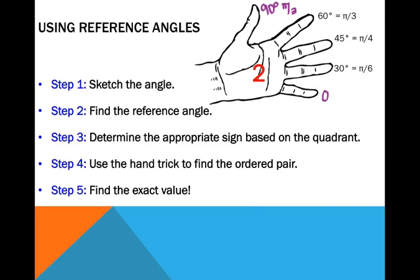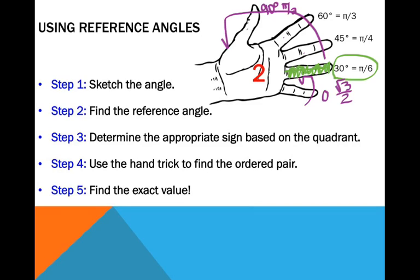When you're using the hand trick, you put that particular finger down for the angle. For example, if I'm looking at 30 degrees, I put this finger down. Your cosine is your x coordinate, and your x coordinate would be the square root of 3 — because you have 1, 2, 3 fingers — over 2. That's why you have this 2 in the palm of your hand. Your y coordinate is the square root of 1, because you have 1 finger left once you put your ring finger down. So that's square root of 1 over 2, which is just 1 half. So at 30 degrees, your coordinate is root 3 over 2, comma, 1 half.